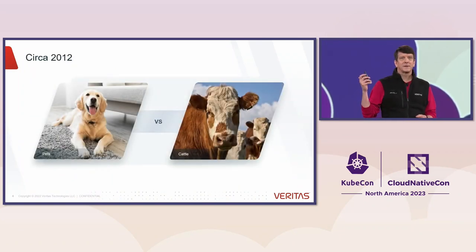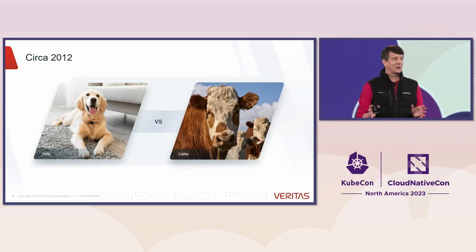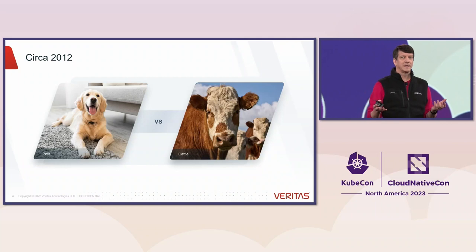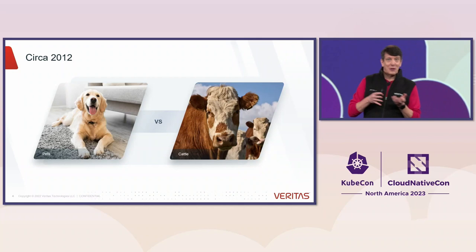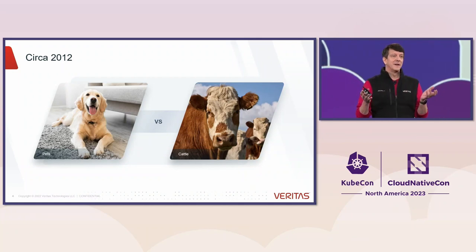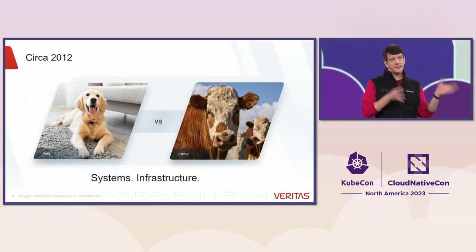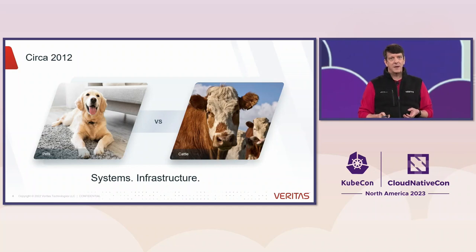Back in 2012, Microsoft's Bill Baker came up with this famous and somewhat controversial analogy focused on describing the life cycle of legacy applications versus modern containerized apps. Developers traditionally take care of their legacy apps in sickness and in health, like pets, versus thinking of them as more replaceable livestock. Of course, stateless apps were all the rage then, and this analogy gave us a good way to think about systems and infrastructure. But this largely left out thinking about the related data that apps rely upon.